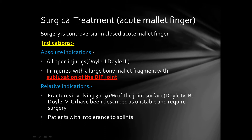Surgical treatment of acute mallet finger is indicated for all open injuries (Doyle 2 and Doyle 3) and for injuries with a large bony fragment with subluxation of the distal interphalangeal joint, which is an absolute indication. Relative indications include fracture involving 30–50% of the joint surface (Doyle 4B) if unstable, and patients intolerant to splinting.